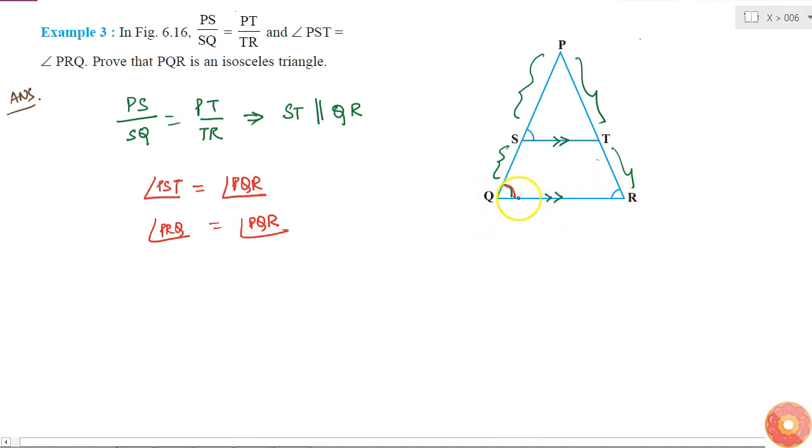Then that is what we call as an isosceles triangle. So this means that triangle PQR is isosceles.